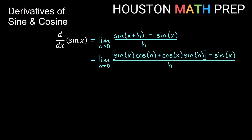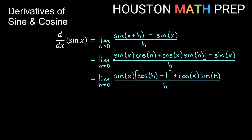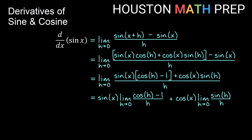Using our identity, we arrive at this expression. In the numerator we have two terms with sine x, so we factor sine x out to get sine x times the quantity (cosine h minus 1), plus cosine x sine h, all over h. Since sine x and cosine x have nothing to do with h, we split the limit: sine x times the limit as h→0 of (cosine h minus 1) over h, plus cosine x times the limit as h→0 of sine h over h.